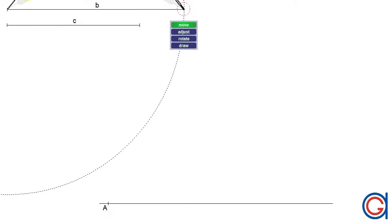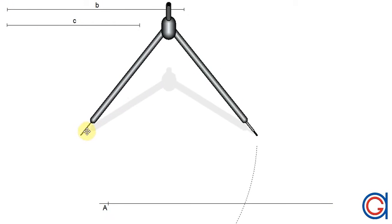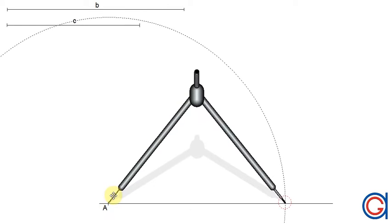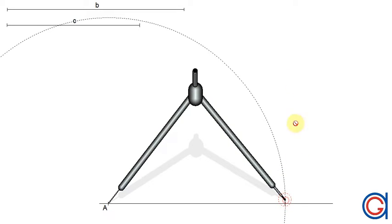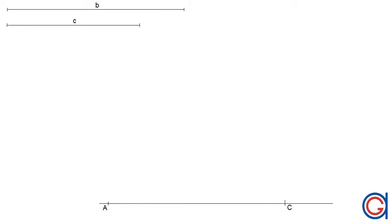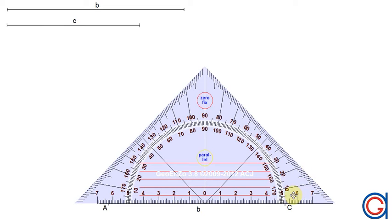Next we set our compass to the length of the given side B and transport this onto the horizontal line. Setting our compass on A, we scribe an arc to get another vertex of our triangle which we will call C.